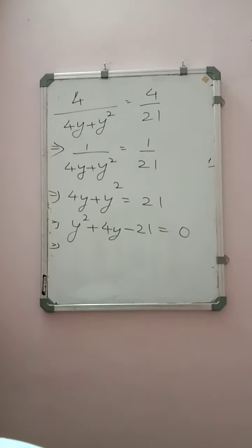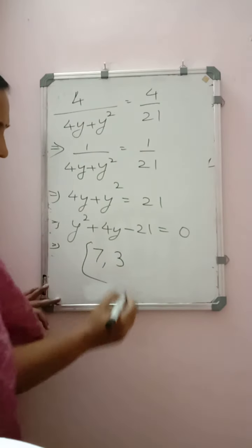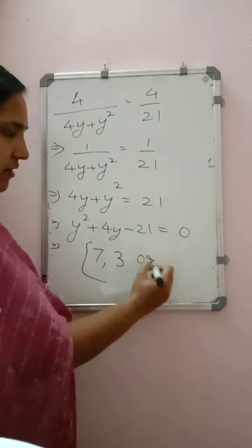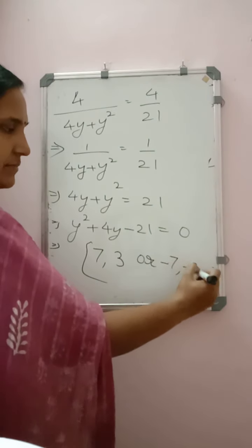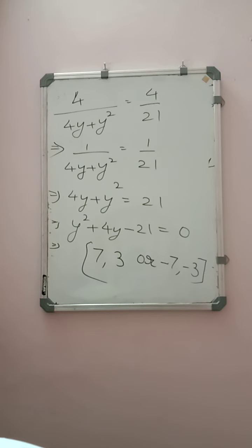Use either factorization or quadratic formula to solve. The answers are y = 3, giving the pair 7 and 3, or y = −3, giving the pair −7 and −3. Negative values can also be taken here because the question did not specify that the numbers must be natural or positive.